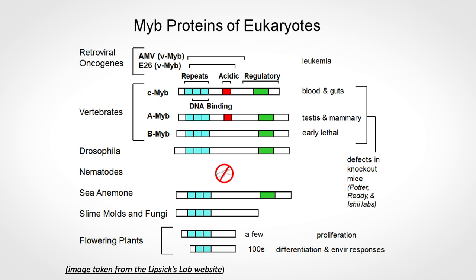The MIB genes encode transcription factors — proteins important for the regulation of gene expression. In humans there are three forms called C-MIB, A-MIB, and B-MIB.